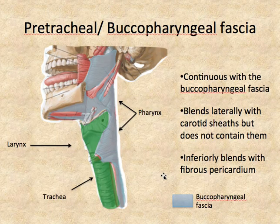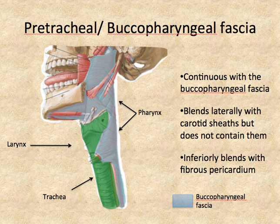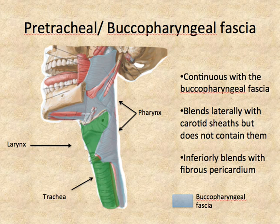The pretracheal fascia, shown in green in this slide, is continuous with the buccopharyngeal fascia, depicted here in gray. The buccopharyngeal fascia is the fascial layer around the pharynx. You'll really appreciate this layer when we disarticulate the head and see how it's continuous with the pretracheal fascia. When you're approaching the neck from the anterior and lateral aspect, you don't get a full appreciation for the pharynx. Importantly, as you move inferiorly, the pretracheal fascia blends with the fibrous pericardium. This continuity of fascia layers with structures in the thorax creates a potential pathway for spread of infection and extravasated blood, indicating where an infection in a certain area could potentially travel.